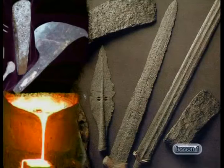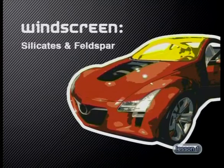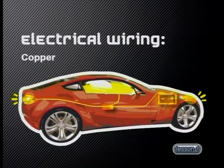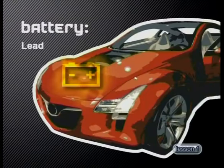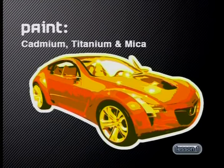Through the ages, people have extracted minerals from rocks to use for different purposes. These special minerals are called ores. The discovery of ores and people's ability to extract the metal within them has been very important to our technological development. Today our modern technology and lifestyles depend on the use of a large range of minerals — everywhere you look there's evidence of this. Take cars, for example. The glass of the windscreen is made from silicates and feldspar. The body is made from steel, the alloy of iron, carbon and manganese. Copper is used in the electrical wiring, platinum is used as a catalyst in the exhaust, lead is used in the battery and as weight to balance the wheels. The paint contains cadmium, titanium and mica. All these minerals come from the rock of the lithosphere.